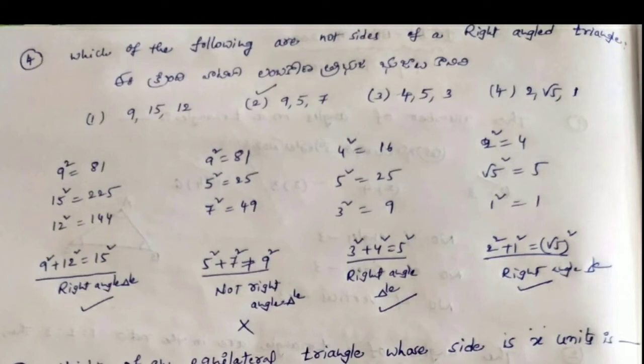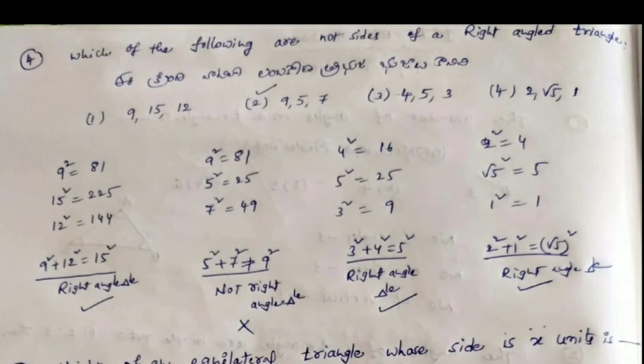Next question: which of the following are not sides of a right angle triangle? For a right triangle, the square of the largest side equals the sum of squares of the other two sides. We check: 9 squared plus 12 squared equals 15 squared. For the option with 5, 7, and 9: 5 squared plus 7 squared is not equal to 9 squared. So that set does not form a right angle triangle.